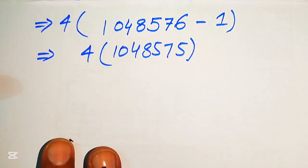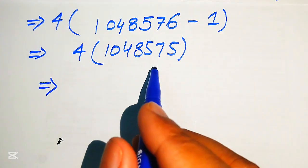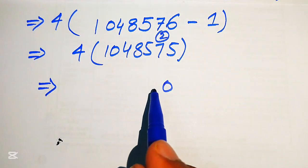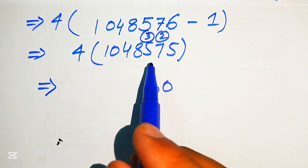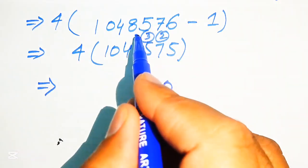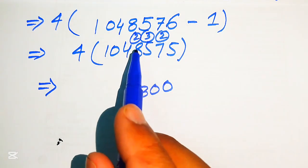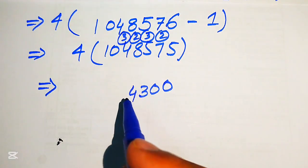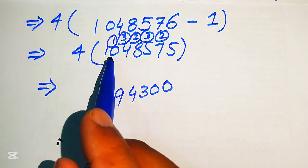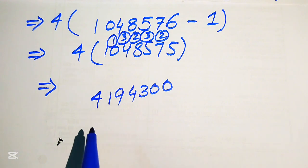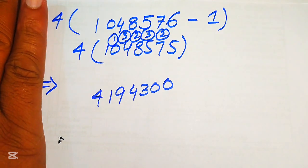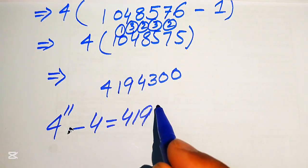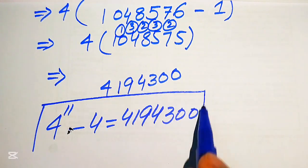Finally we multiply 4 by 1048575. Working through: 4 5s are 20 write 0 carry 2; 4 7s are 28 plus 2 is 30 write 0 carry 3; 4 5s are 20 plus 3 is 23 write 3 carry 2; 4 8s are 32 plus 2 is 34 write 4 carry 3; 4 4s are 16 plus 3 is 19 write 9 carry 1; 4 0s are 0 plus 1 is 1; 4 1s are 4. So 4 to the power of 11 minus 4 equals 4,194,300.